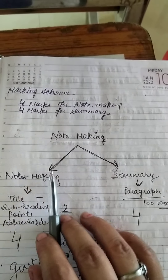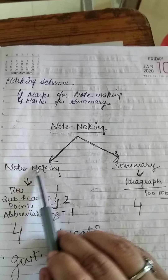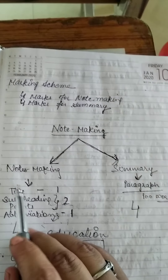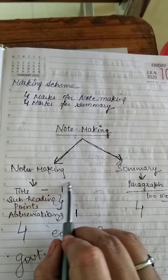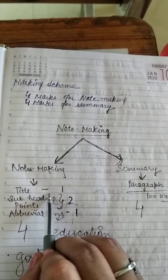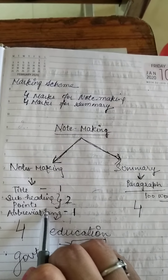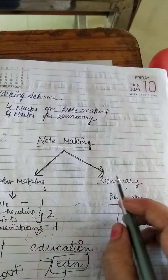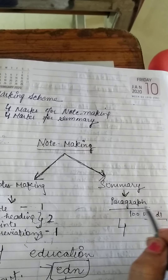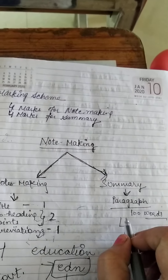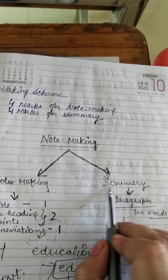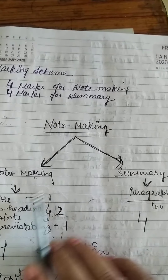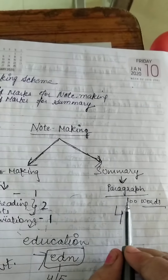Note making is divided into two parts: first, prepare the notes, and second, write down the summary of that passage. Regarding the marks division: 1 mark for title, 2 marks for subheadings and points, 1 mark for abbreviations — minimum five — and 4 marks for summary, which should be a 100-word paragraph.